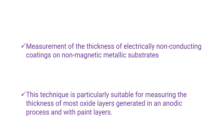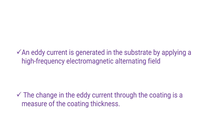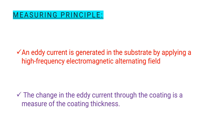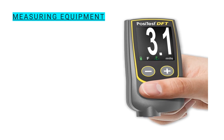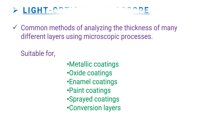The next method is the eddy current method, which measures the thickness of electrically non-conducting coatings on non-magnetic metallic substrates. This technique is particularly suitable for measuring the thickness of most oxide layers generated in the anodic process and paint layers. An eddy current is generated in the substrate by applying a high-frequency electromagnetic alternating field. The changes in the eddy current through the coating are a measure of coating thickness. Below are shown measuring instruments working under the eddy current method.